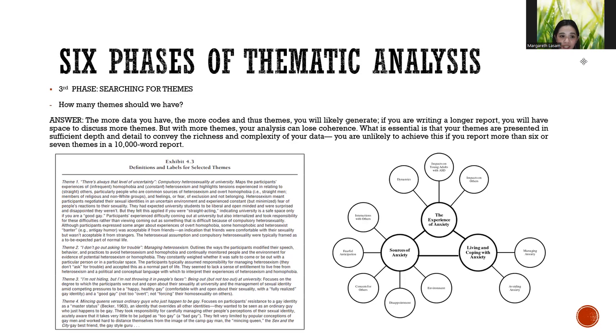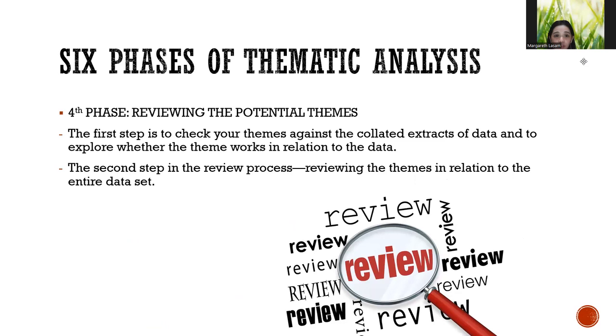So, example dito, sa exhibit 4.3 definitions and labels for selected themes, nakagawa siya ng apat na themes. So, ayan, example ng theme, there's always that level of uncertainty. Ibig sabihin, compulsory heterosexuality at university. Ayan, so dito naman sa kabila, sa right side, meron tayong tinatawag na semantic map. So para siyang maglalagay ka lang ng mga bubbles, so depende sa'yo eh kung anong style yung gusto mo. Meron pa nga yung word cloud, maraming iba't ibang klase ng thematic maps.